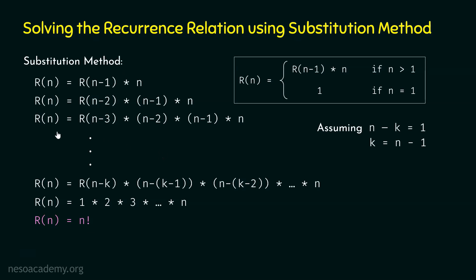In the substitution method, we always need to observe the pattern and accordingly write the generalized expression. After writing the generalized expression, we need to solve it. In this case, we assume R(n-k) is the return value of the last function call. This assumption is important: since it belongs to the last function call, the base case must be satisfied. Because of this, n minus k becomes equal to 1. From this equation we obtain the value of k, and then we replace k everywhere in the expression to obtain the final result.